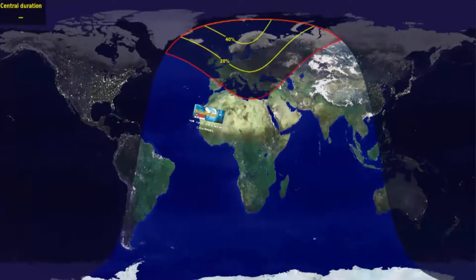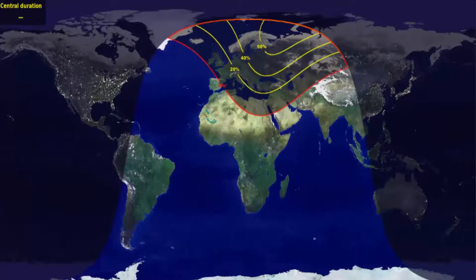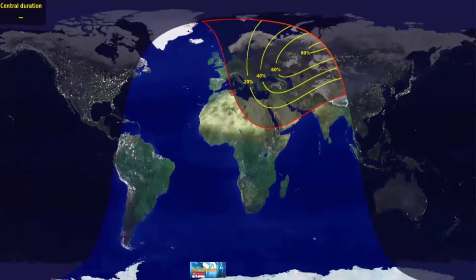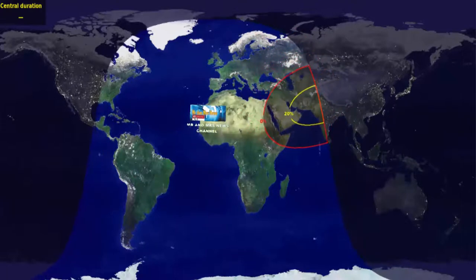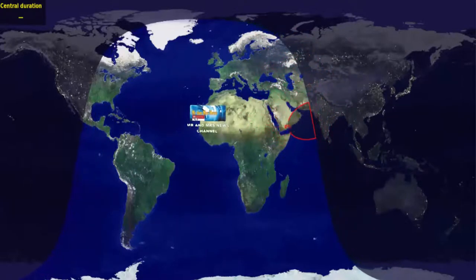Sayangnya, gerhana sebagian hanya dapat dilihat di beberapa tempat saja yaitu bagian Rusia Barat dan Kazakhstan. Ini akan paling baik dilihat dari Rusia Tengah dengan cakupan lebih dari 80%.